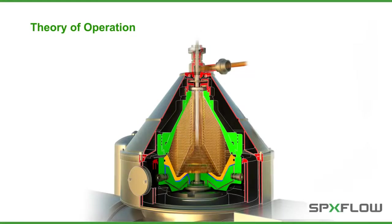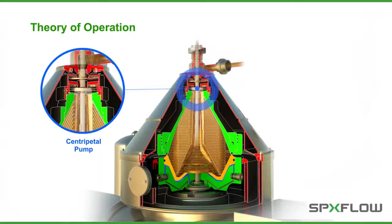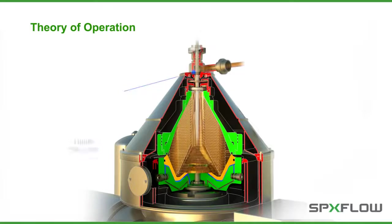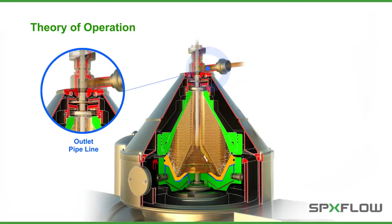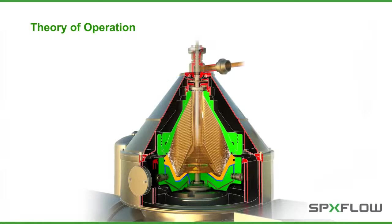The clarified product then flows through the disc stack to the upper chamber of the bowl. Here, a fixed centripetal pump conveys it under pressure to the outlet pipeline. A hydraulic seal prevents product oxidation as well as losses of CO2, SO2, and aromatic flavors.